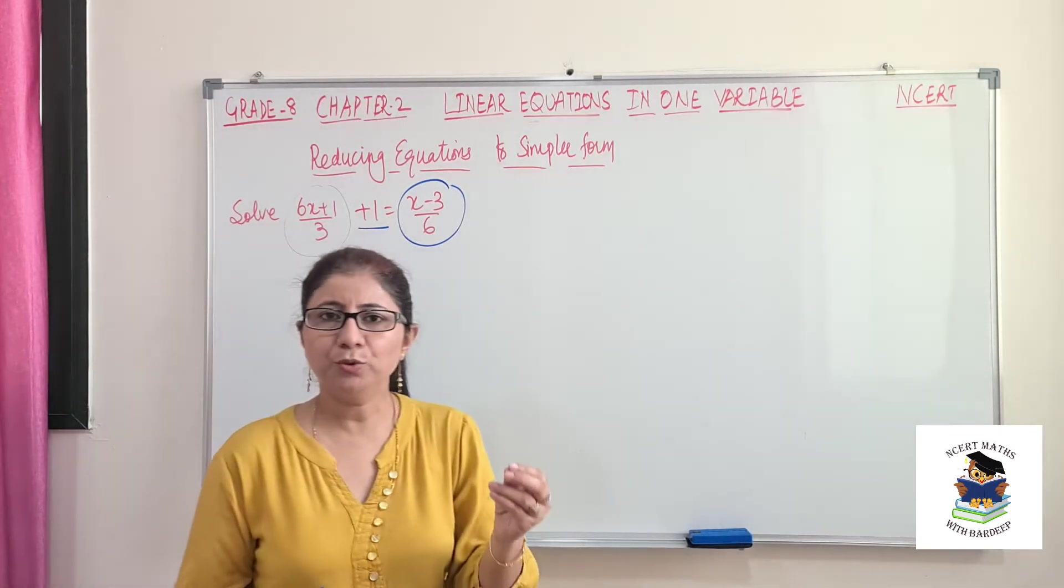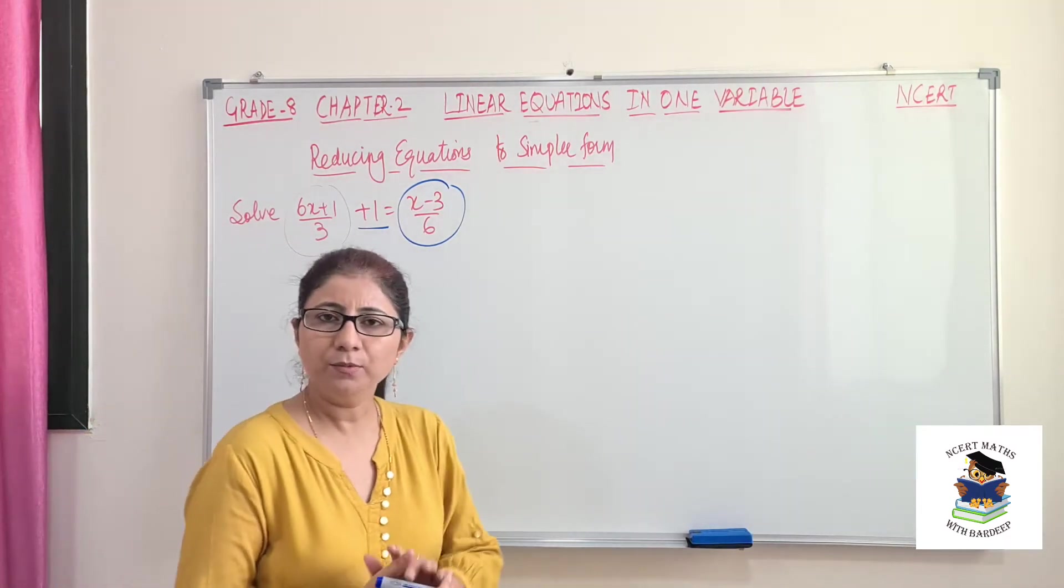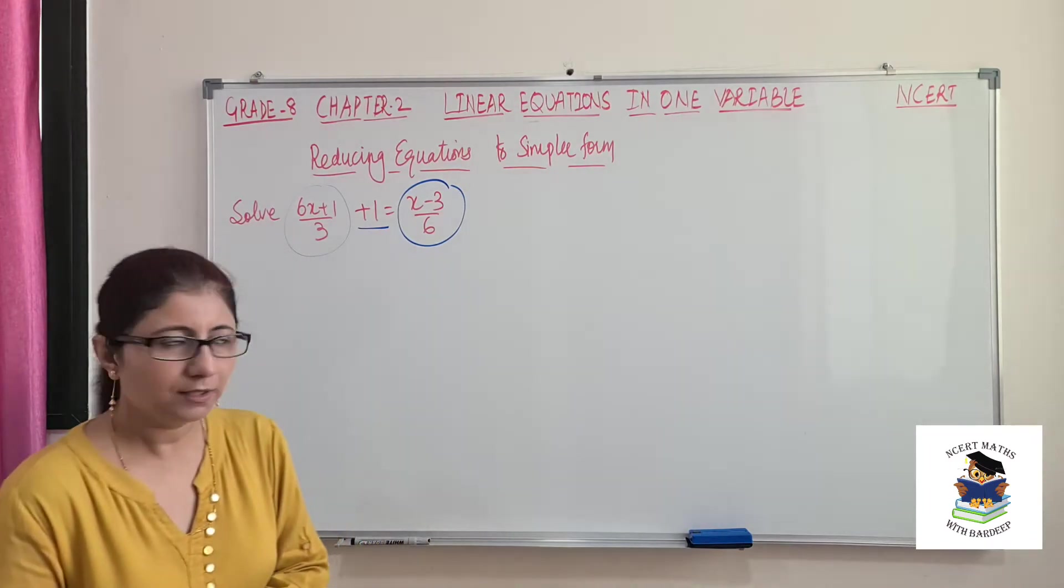So the first step that you should do is take LCM of the denominators and make the denominators same for both left hand side and right hand side.